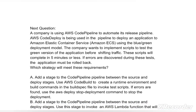Next question: A company is using AWS CodePipeline to automate its release pipeline. AWS CodeDeploy is being used in the pipeline to deploy an application to Amazon Elastic Container Service using the blue/green deployment model. The company wants to implement scripts to test the green version of the application before shifting traffic. These scripts will complete in 5 minutes or less. If errors are discovered during these tests, the application must be rolled back. Which strategy will meet these requirements?